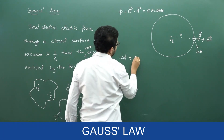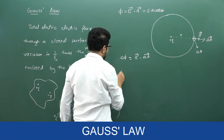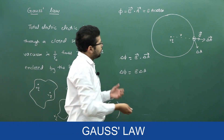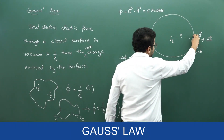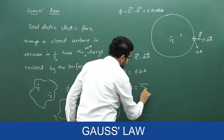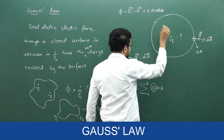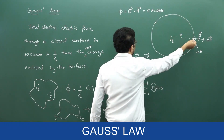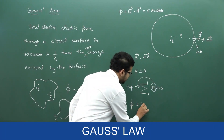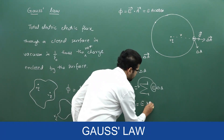Small flux delta phi is equal to E dot delta a. Since cos theta equals cos 0 degrees equals 1, I can write delta phi is equal to E into delta a. To calculate total flux, we add the flux through all these small areas throughout the sphere. So, summation of delta phi equals summation of E into delta a. E is constant everywhere on the surface because electric field depends on the charge and the distance, and everywhere on the surface the distance from the center is r. Therefore E is constant and can be taken outside: total electric flux equals E into summation of delta a. Adding all these small areas throughout the sphere gives the total area of the sphere, which is 4 pi r squared.